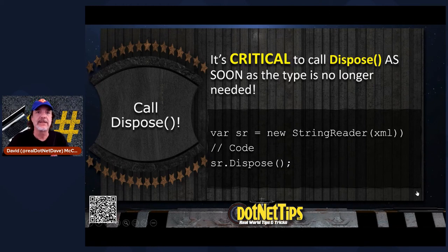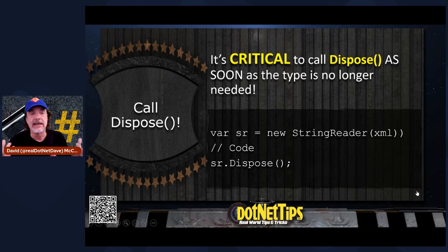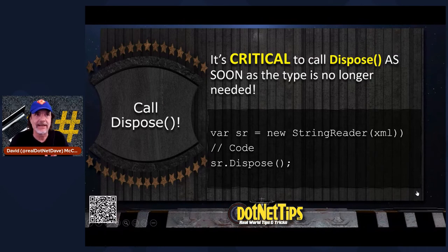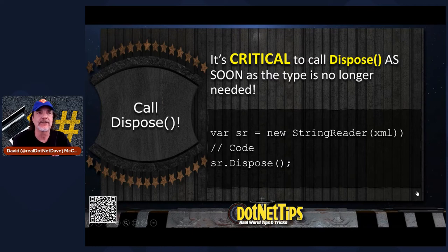I don't have time to get into what dispose really does, because what dispose really does is dependent on the object that implements it. Sometimes it can get rid of files hanging around on the system. Sometimes it can get rid of things out of memory. Sometimes it can release pointer connections to databases or connections to FTP. Every dispose method does something differently, implemented by whoever wrote that type. But as developers, we need to make sure that we call dispose as soon as we're done, especially if these systems are running in the cloud.